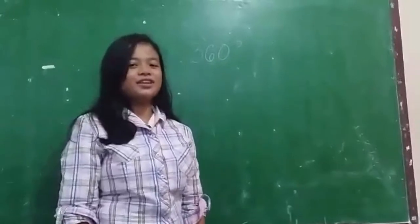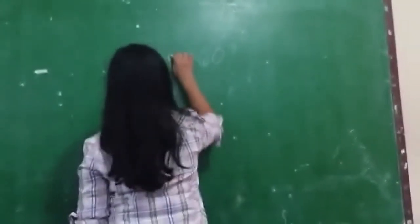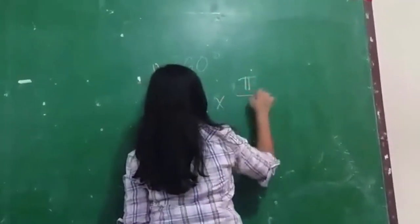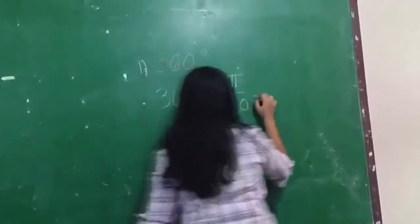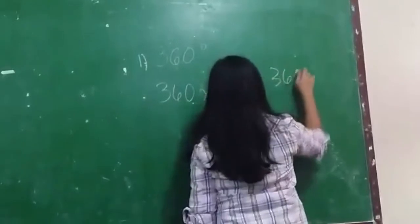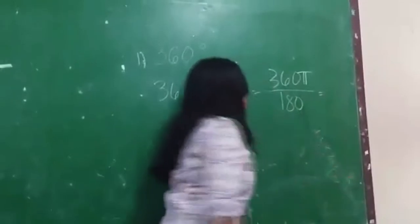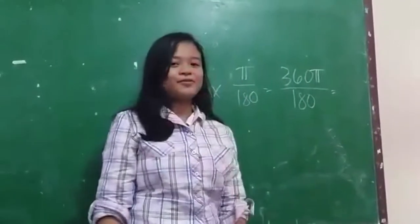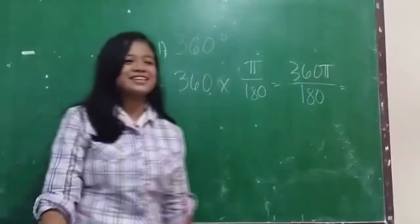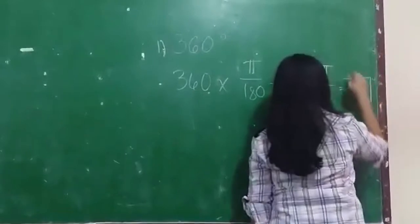Good day everyone, today I'm going to teach you how to convert degrees to radians. Let's start with the first example. 360 times π over 180. 360 times π is 360π, then copy 180. 360π over 180 or 360π divided by 180 is equals to 2π. And here is the answer 2π.